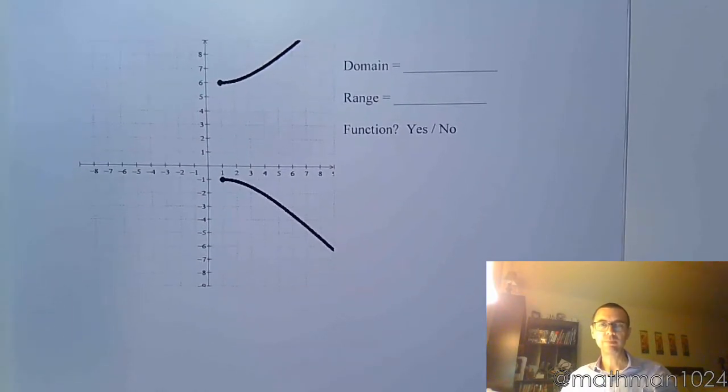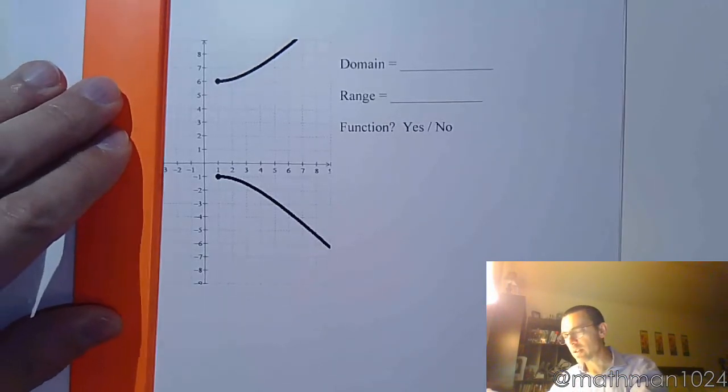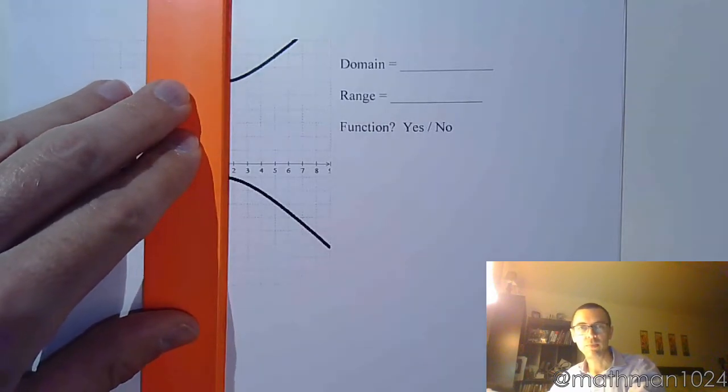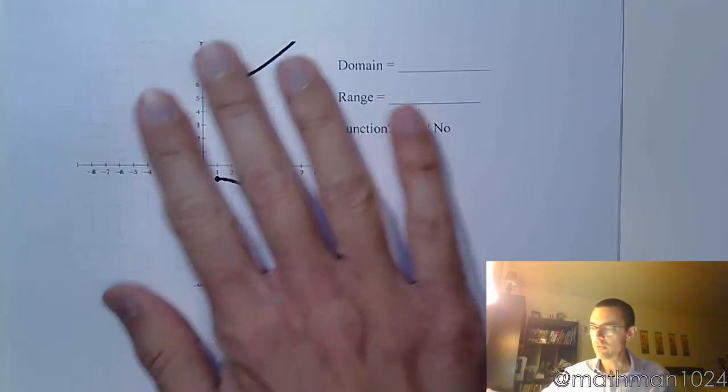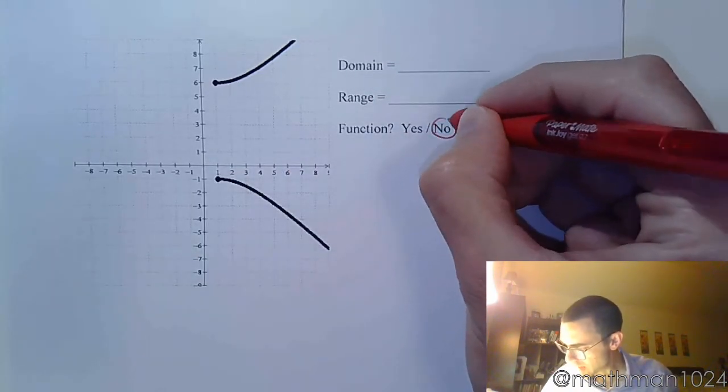We've got two more to look at. Starting with this guy. So I hope you guys can see pretty quickly that this fails the vertical line test. Everything is fine until I get here. And then you draw a vertical line. It's going to go through two points. So not a function.